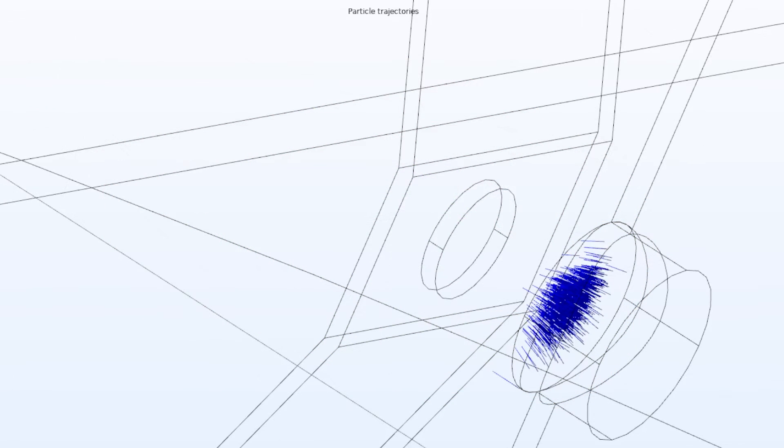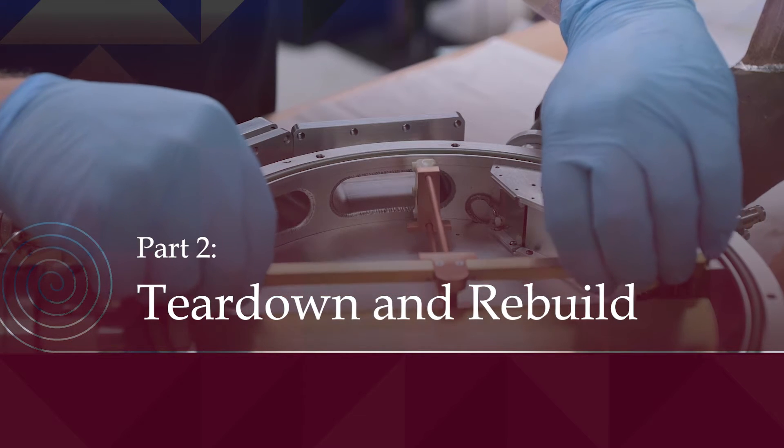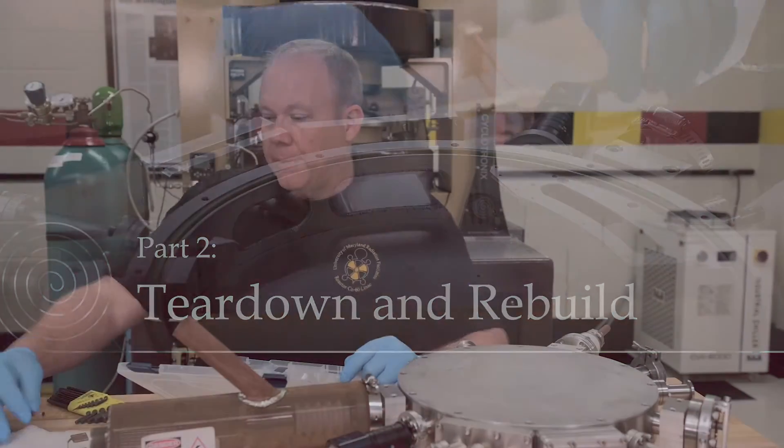When we zoom in, we can see the effect of a puller not only enhancing the extraction field but also causing a focusing effect. You can see the beam goes through a waist behind the puller.